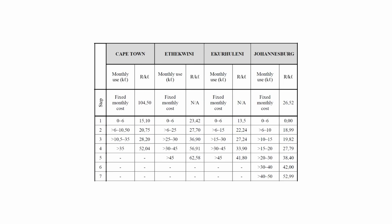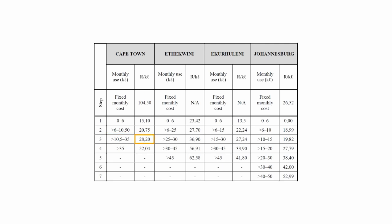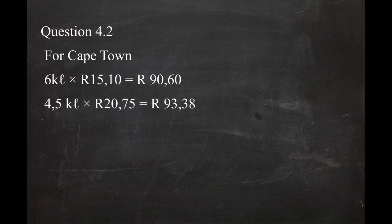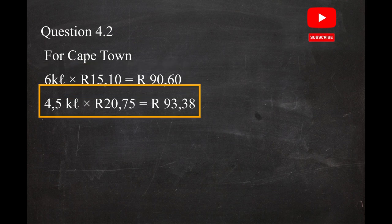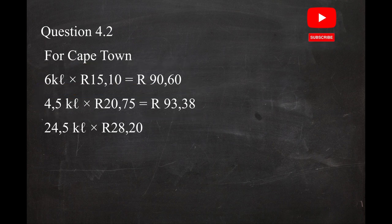In step three, the range is greater than 10.5 kilolitres to 35 kilolitres. The maximum amount chargeable is 35 − 10.5 = 24.5 kilolitres, at R28.20 per kilolitre. You must subtract 10.5 kilolitres because it was already charged in steps one and two. The cost for step three is 24.5 kilolitres × R28.20 = R690.90.